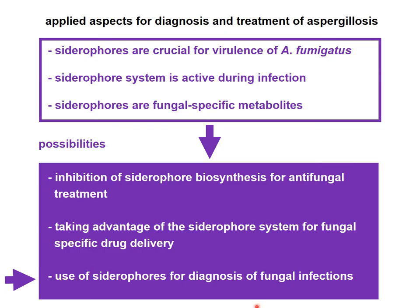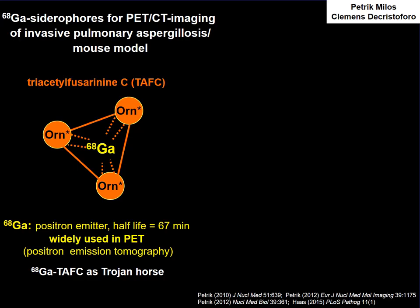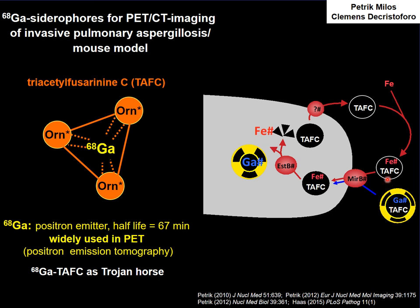Next, to the use of siderophores for diagnosis of fungal infections. It was already known that some siderophores can chelate not only iron, but also some other metals with a similar size like gallium or aluminium. It was the idea of Clemens de Christophoro, a radiopharmacologist here in Innsbruck, to use gallium-labeled siderophores as Trojan horses to trace fungal infections. There's a very nice isotope of gallium — gallium-68 — it's a positron emitter with a half-life of 67 minutes, and it's already widely used in medicine for positron emission tomography. We found that gallium-labeled TAF-C is taken up as efficiently as iron-labeled TAF-C, specifically via MIRB.